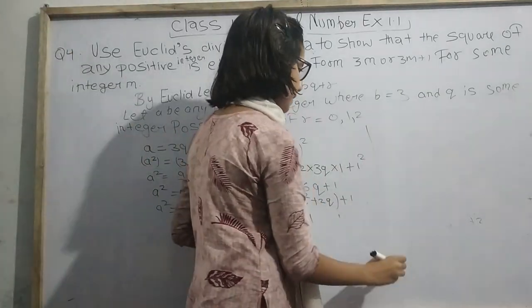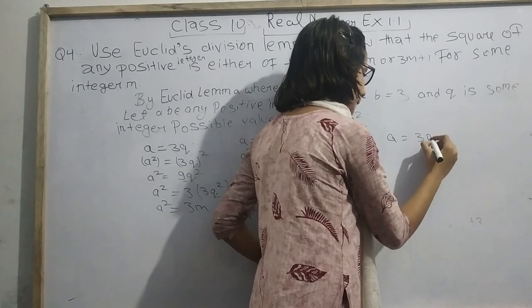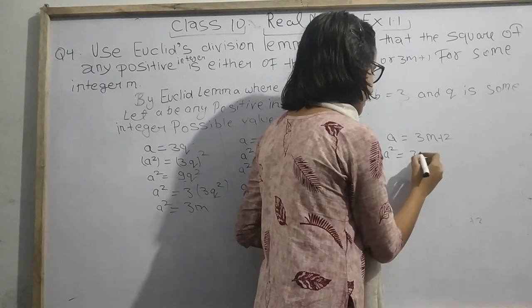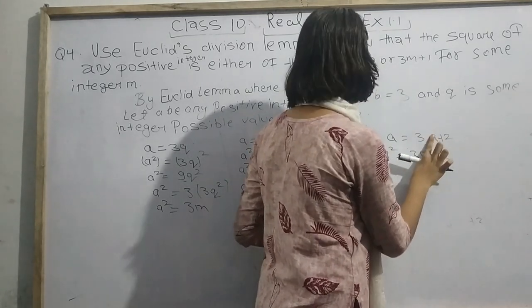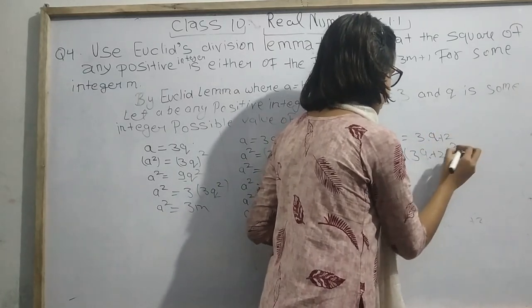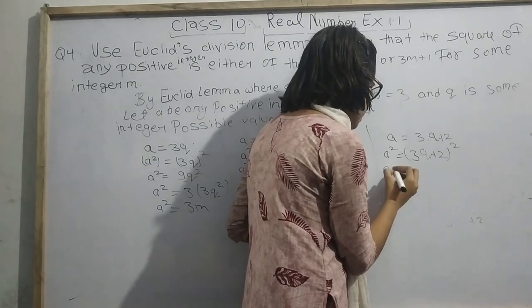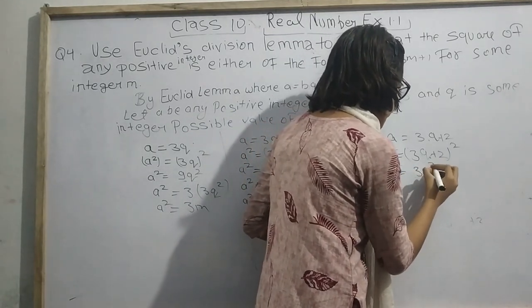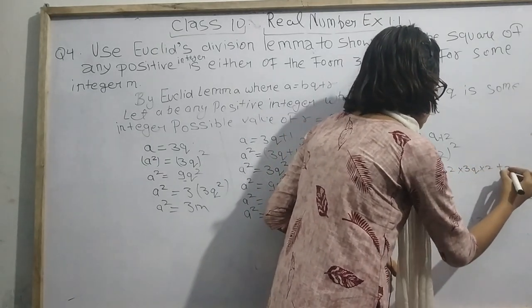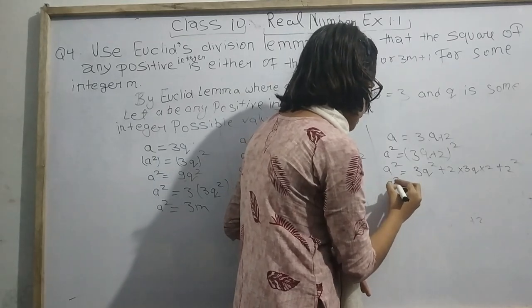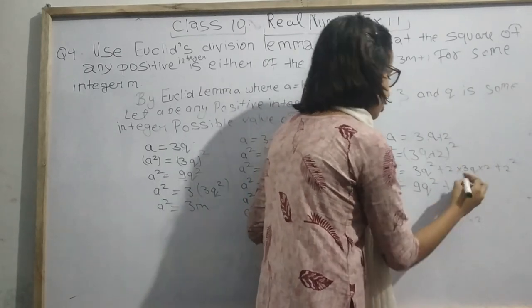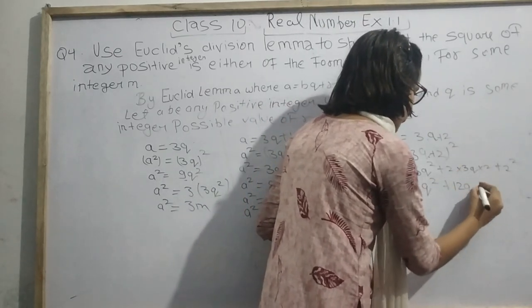Now let us move to A equals 3Q plus 2. So A square equals 3Q plus 2 whole square. A square equals 3Q square plus 2 into 3Q into 2 plus 2 square. That is 9Q square plus 12Q plus 4.